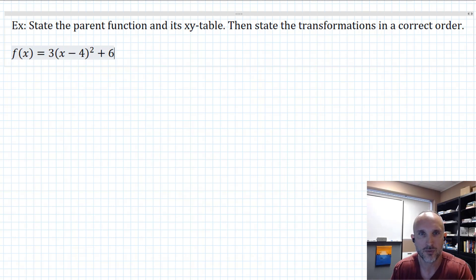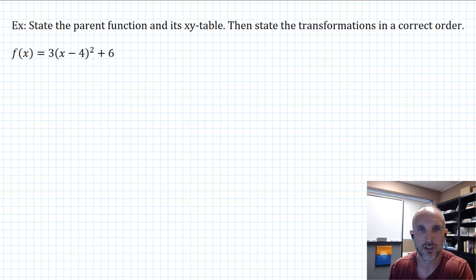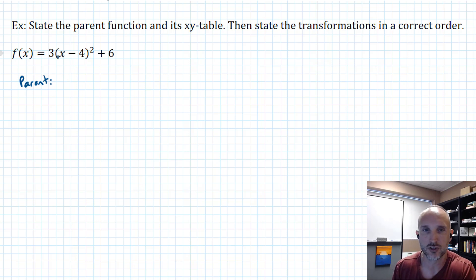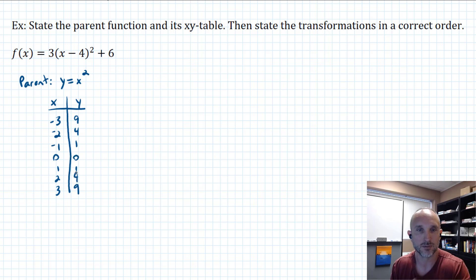So the first thing's first. If you want the parent function, you have to basically strip away all of the arithmetic — strip away the three, strip away the minus four, and strip away the plus six. We can see that we just have Y equals X squared. That XY table is simple to generate because it's one operation. We can put any X values we want — some negatives, zero, and some positives — and then square them to get the corresponding Y values.